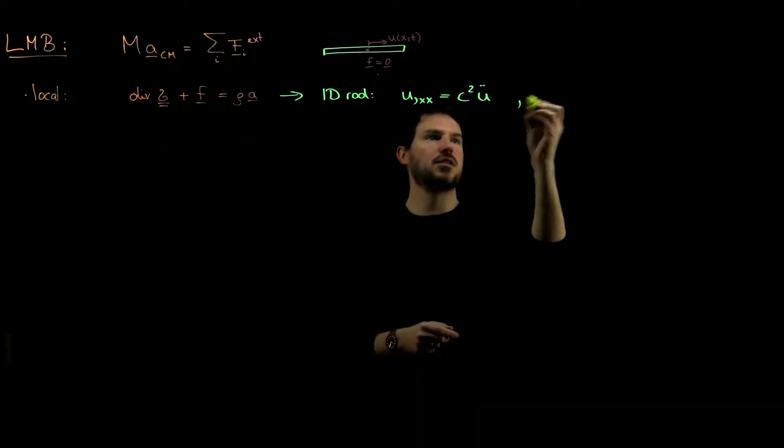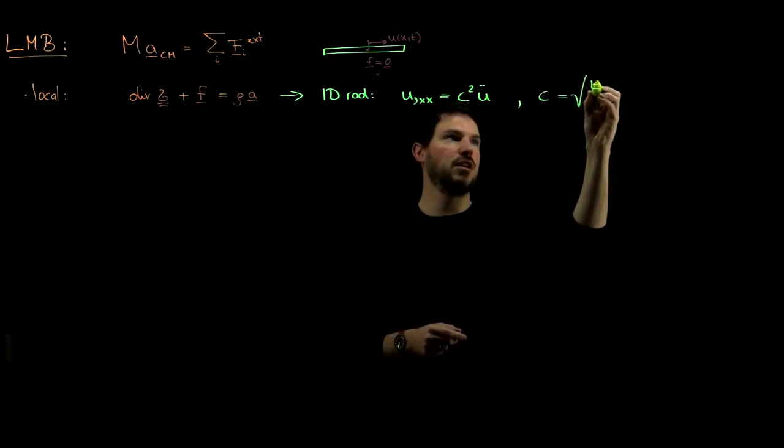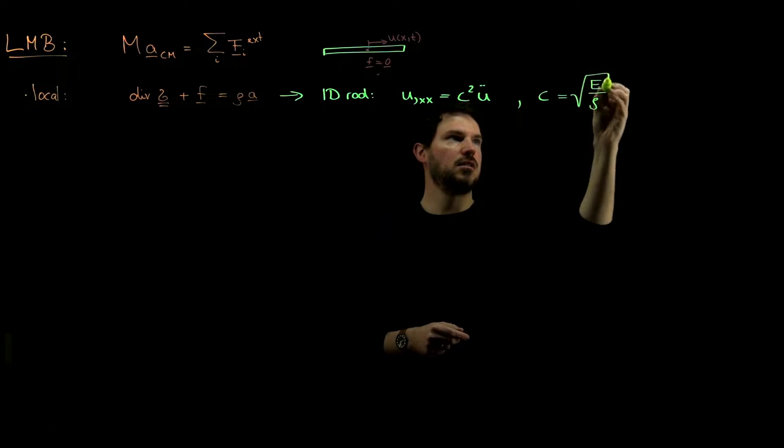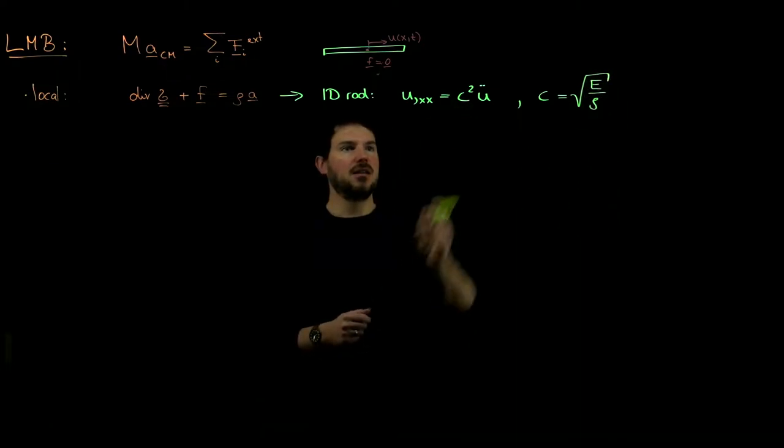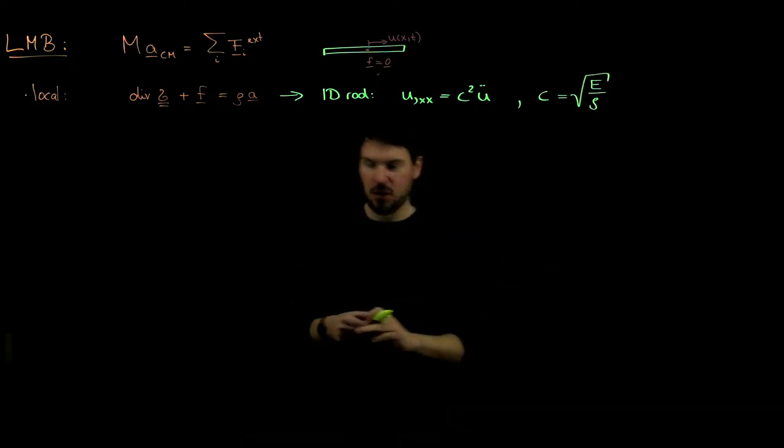And this c, which we have in here, is nothing else but the longitudinal wave speed, which we saw was the square root of E, Young's modulus, over rho. This tells us how waves propagate in a 1D fashion inside such a solid.